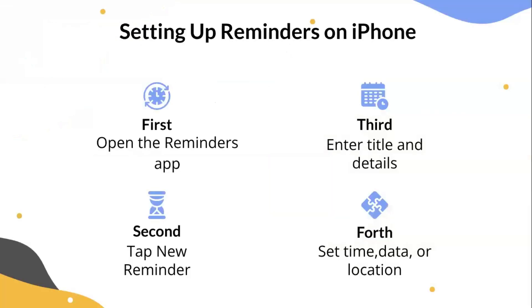Setting up reminders on iPhone: first, open the Reminders app; second, tap New Reminder; third, enter your title and details like date and time; and fourth, set a time, date, or location trigger.